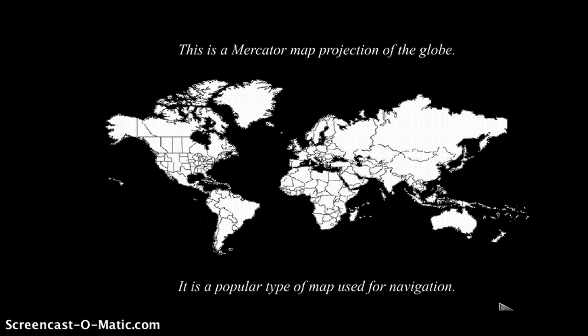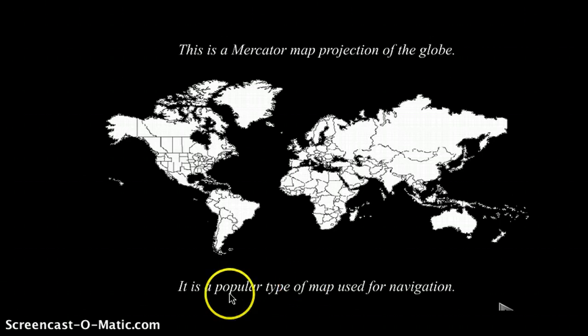This is a Mercator map projection of the globe. Remember yesterday we talked about 'mer' being part relating to water, like mermaid. Mercator is the type of map that's used for navigation, the kinds that ships use to navigate the seas, the waters.